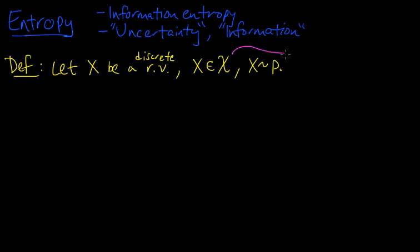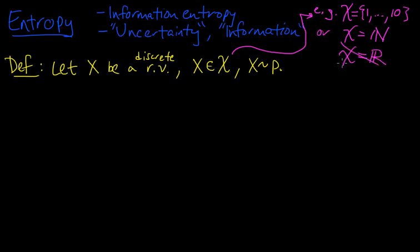For example, script X may be the set of numbers from 1 to 10, or it may be the natural numbers. But it's not going to be a set like the real numbers. That is not going to be the case, because that's not a countable set. It's an uncountable set, if you're familiar with the concepts of countability and uncountability.